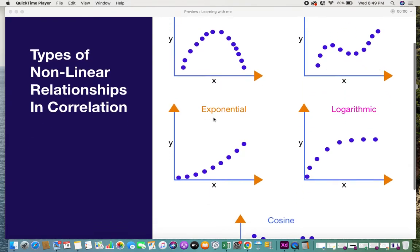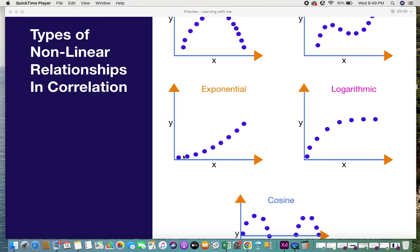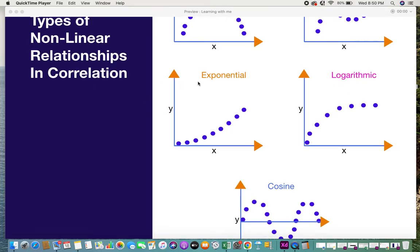The next one is exponential. When I say exponential it means that the variables are constantly at a constant rate they keep increasing or they keep doubling. A very common example of this is the growth of bacteria. Over time the growth of bacteria keeps doubling and increasing exponentially. That's about the exponential nonlinear relationship.